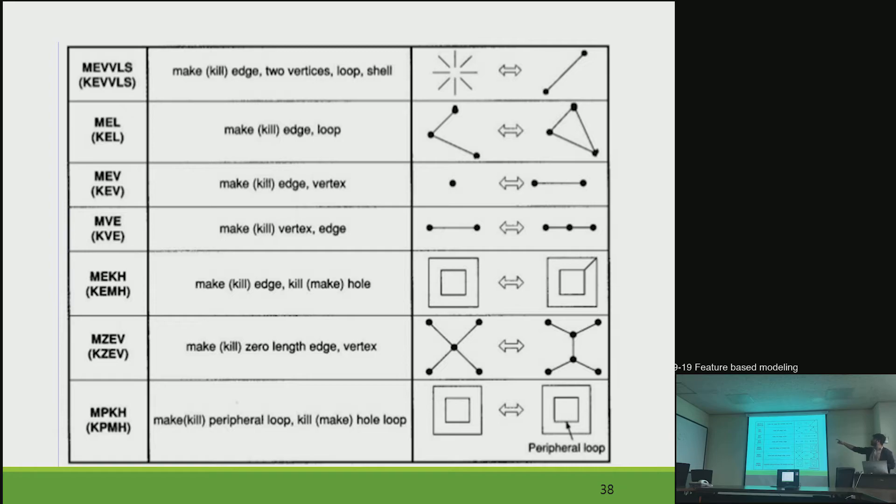And there is more information. You can see that MEL means make edge loop. So from that, you have reached to a loop. But KEL means kill edge loop. So then one edge is removed.